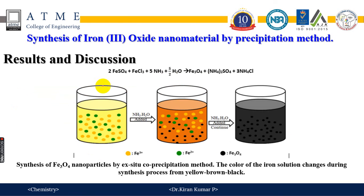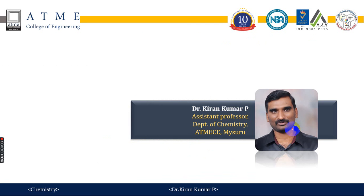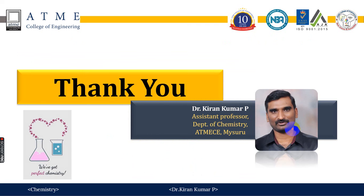This is the reaction involved: FeSO₄ and FeCl₃. Ammonia is added with constant stirring at 1000 RPM and we get a black precipitate of Fe₃O₄. Hence, the method is the precipitation method and we get a black precipitate. Thank you.